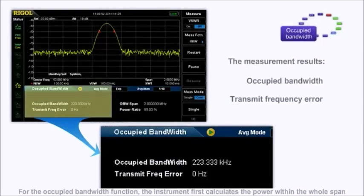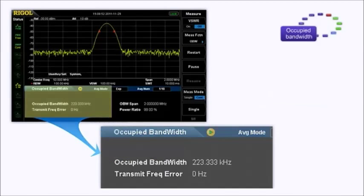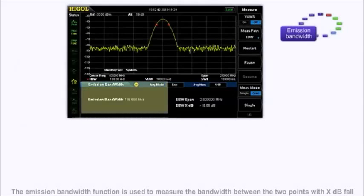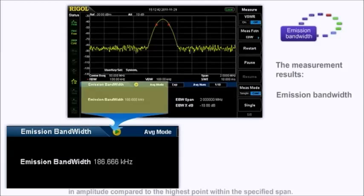For the occupied bandwidth function, the instrument first calculates the power within the whole span and then calculates the bandwidth occupied by the power according to the specified power ratio. The emission bandwidth function is used to measure the bandwidth between the two points with XdB fall in amplitude compared to the highest point within the specified span.